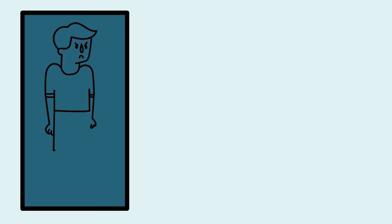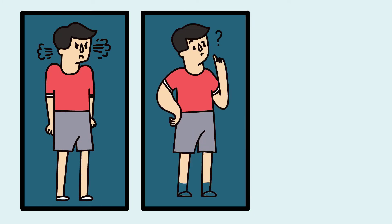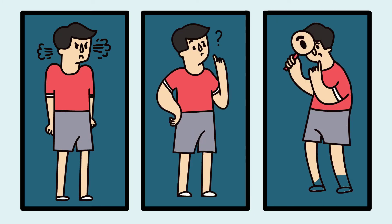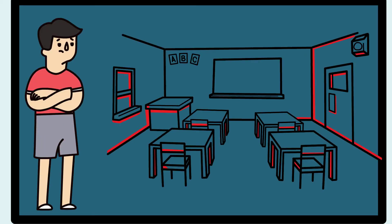Neurodevelopmental disorders are disabilities in the functioning of the brain that influence a child's behavior, memory or ability to learn. A common feature of neurodevelopmental disorders is that they manifest in the early stages of development. Often the symptoms appear before the child enters school or during the early stages of schooling.